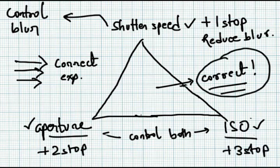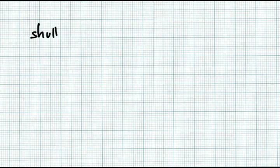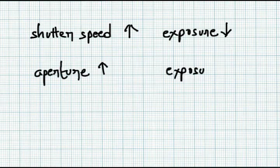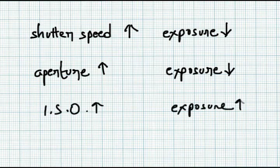All you need to do is remember this simple chart. Increasing shutter speed decreases exposure. Increasing aperture decreases exposure. And increasing ISO increases exposure. Rest is all simple arithmetic in terms of stops.